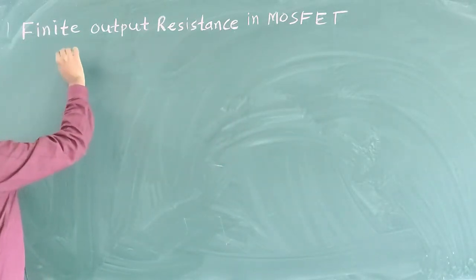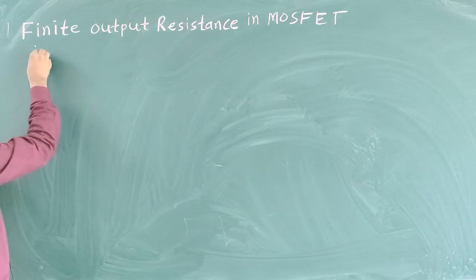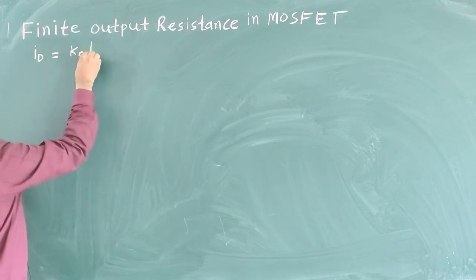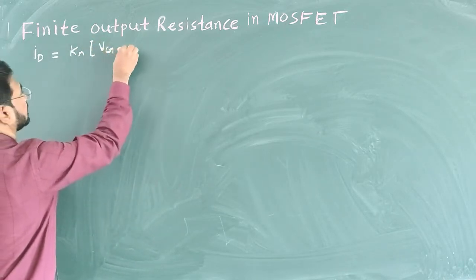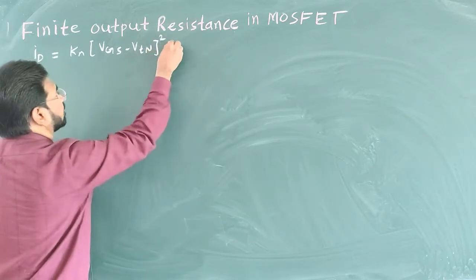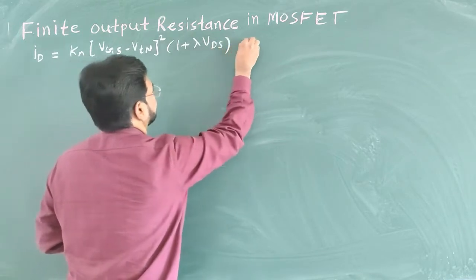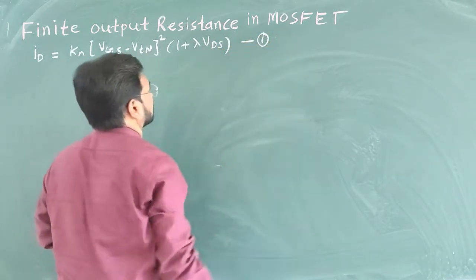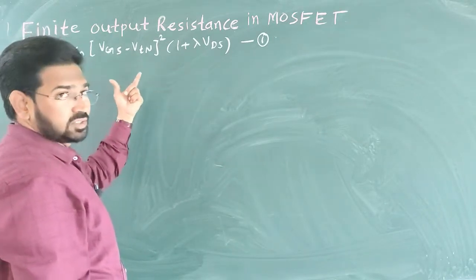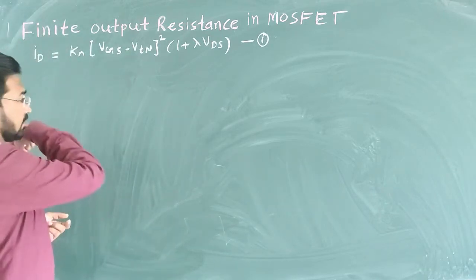We have the equation due to channel length modulation. The drain current equation is: ID = KN(VGS − VTN)² × (1 + λVDS). This is equation number 1. The discussion of finite output resistance in MOSFET is totally based on this equation, and it starts with channel length modulation.